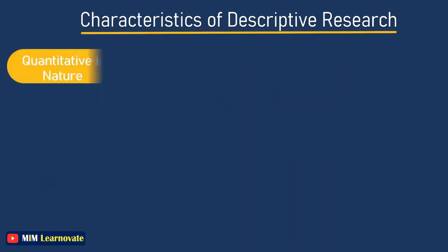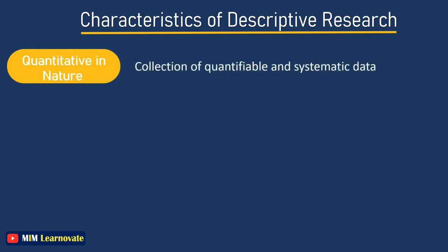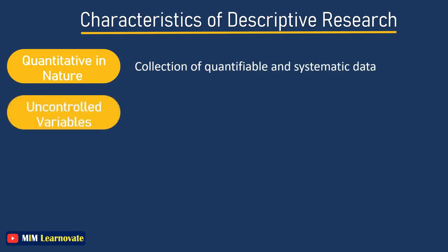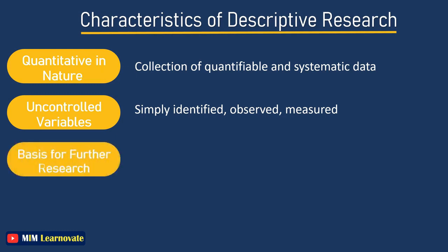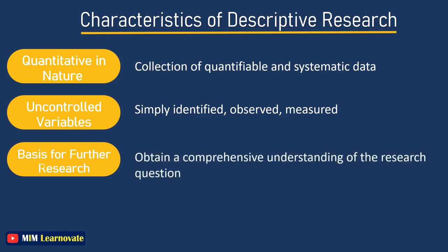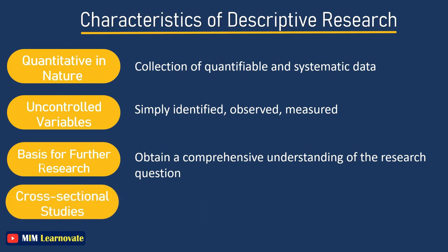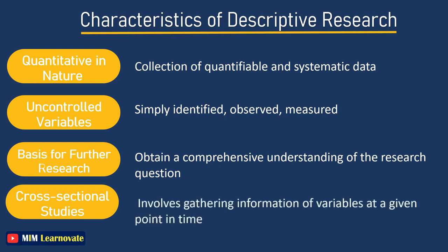Characteristics of descriptive research: It is quantitative in nature, involving collection of quantifiable and systematic data for statistical analysis. Variables are uncontrolled — unlike in experimental research, they are not manipulated but simply identified, observed, and measured. It provides a basis for further research by helping obtain a comprehensive understanding of the research questions. Descriptive research is generally carried out through cross-sectional studies, which involve gathering information on a variety of variables at the individual level at a given point in time.